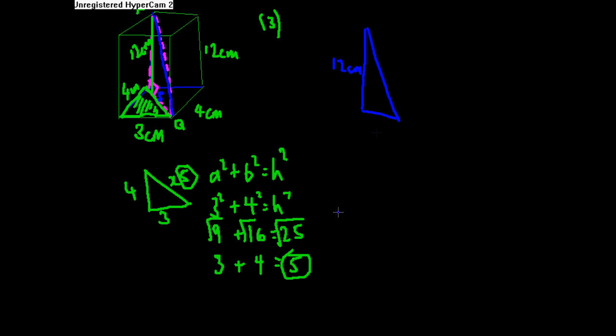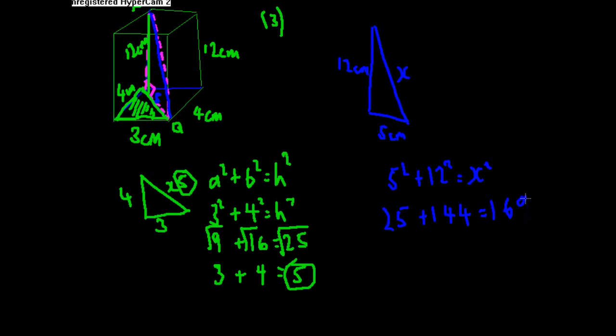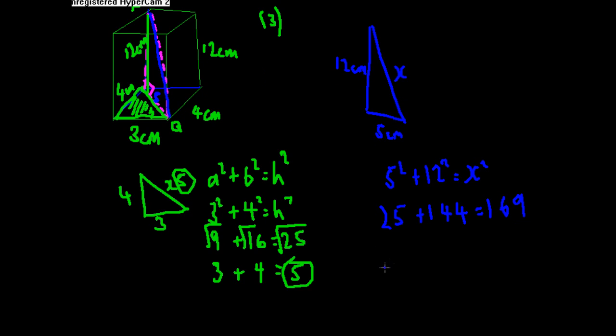This means back to normal Pythagoras again. So we can simply do 5 squared plus 12 squared equals x squared in this case, and we know that's 25 plus 144 which equals 169. Square root of all of them equals 13, which means that the length PQ equals 13 centimeters.